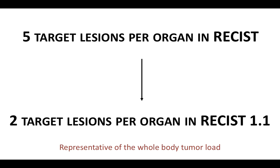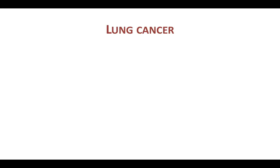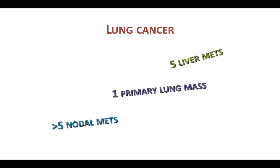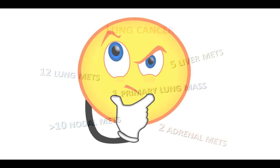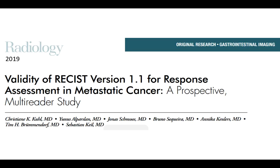Similarly, RECIST allowed five target lesions per organ while RECIST 1.1 reduced it to two per organ, but it's not so easy in actual clinical practice. For example, in a lung cancer patient with one primary lung mass and multiple liver metastases, nodal metastases, adrenal metastases, and lung metastases, it's not easy to select a maximum of five target lesions. Clearly, if two or three different radiologists interpret the scan, they may select different target lesions — and this is what this article looked at: the validity of RECIST 1.1 for response assessment in view of this potential variability in selecting target lesions.